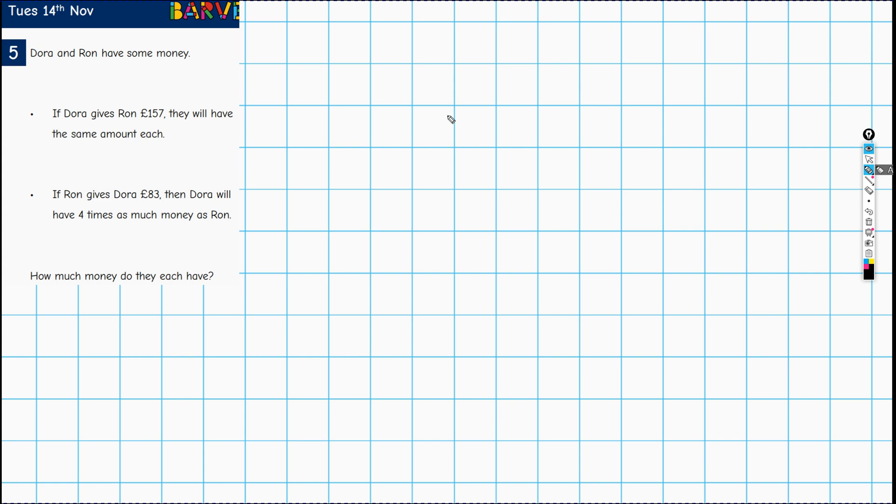Now I'm going to try and approach this as far as I can as I think a novice might, and assume as little knowledge as possible. I'm just going to start by drawing this scenario here. So we're going to have two bars, one for Dora, one for Ron. Let's say that this is Ron's bar. This represents the amount of money that Ron has. Then I'm going to draw a longer bar for Dora.